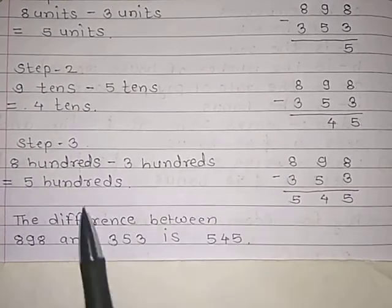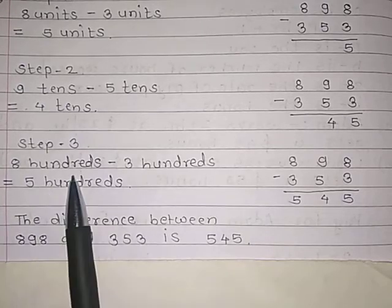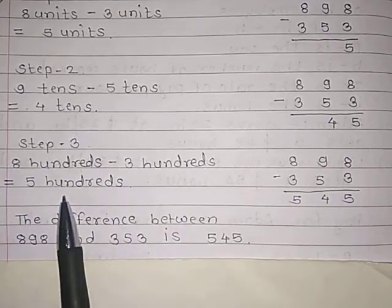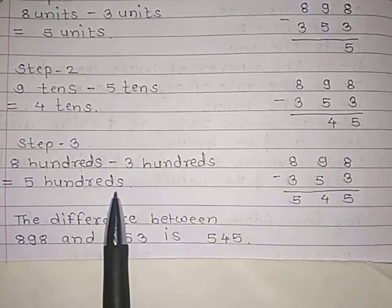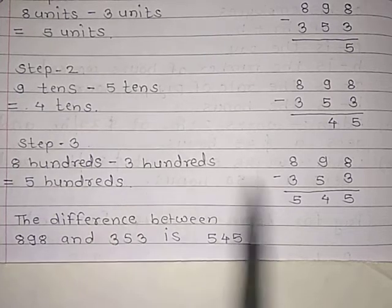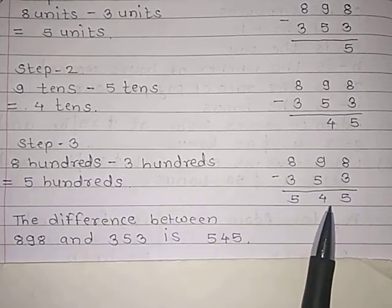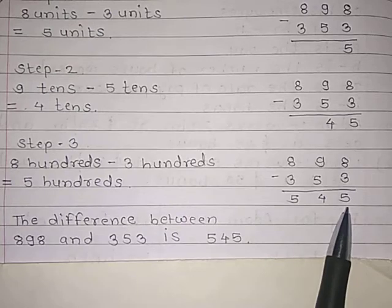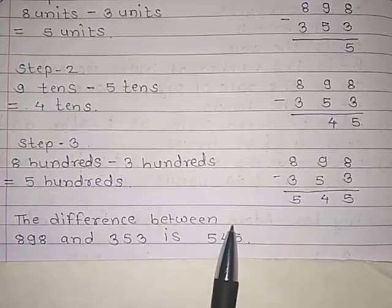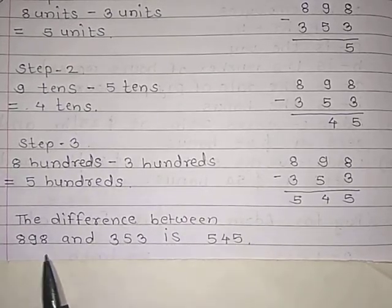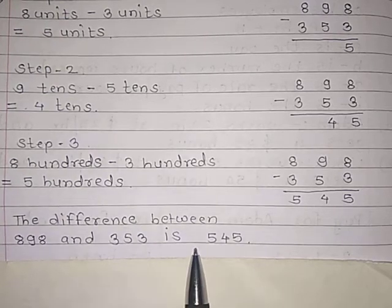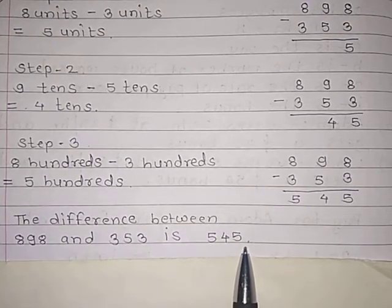Now we have to subtract in the hundreds place. 8 hundreds minus 3 hundreds equals 5 hundreds. So the final answer is 545. The difference between 898 and 353 is 545.